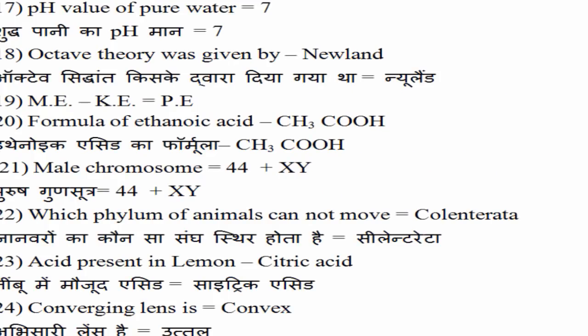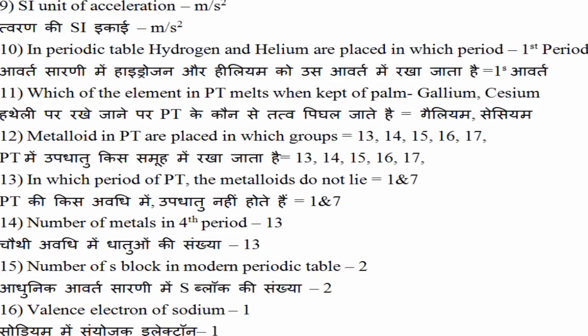पहला boron से शुरू होता है और खत्म astatine पे होता है. 13वाँ question आपका कि metalloid किस आवर्त में नहीं रहते हैं. आप याद रख लीजिए — पहले और सातवें आवर्त में हमारे कोई भी metalloid — उपधातु — नहीं पाया जाता है.